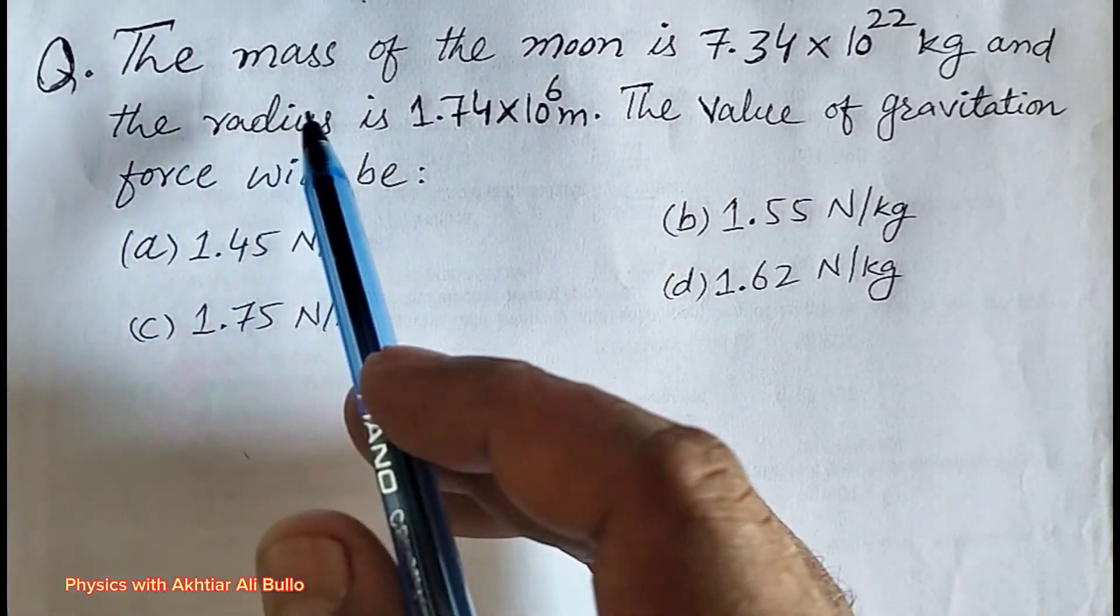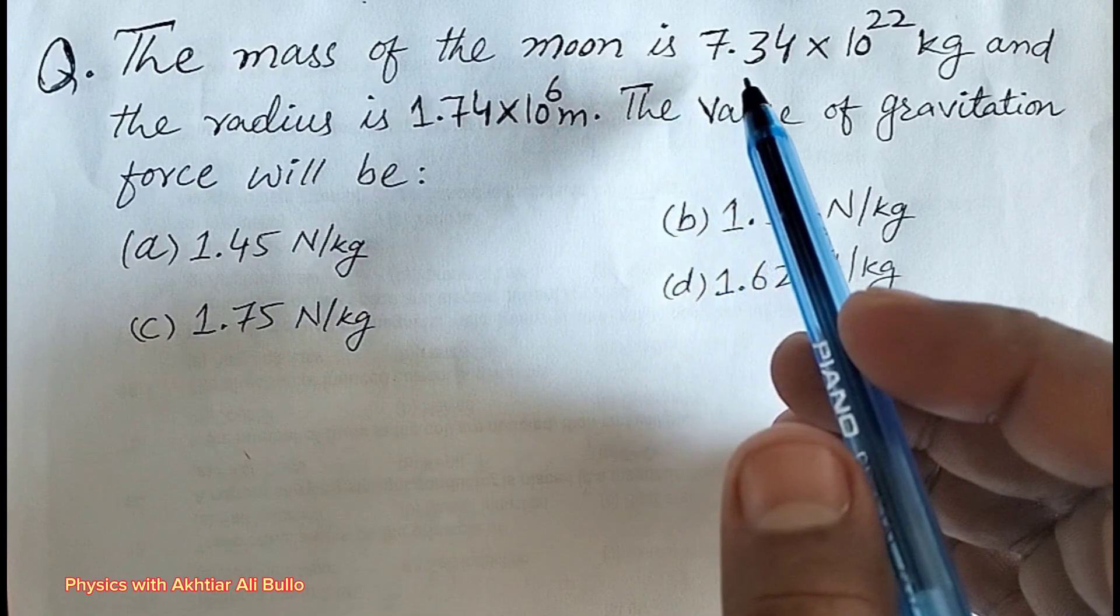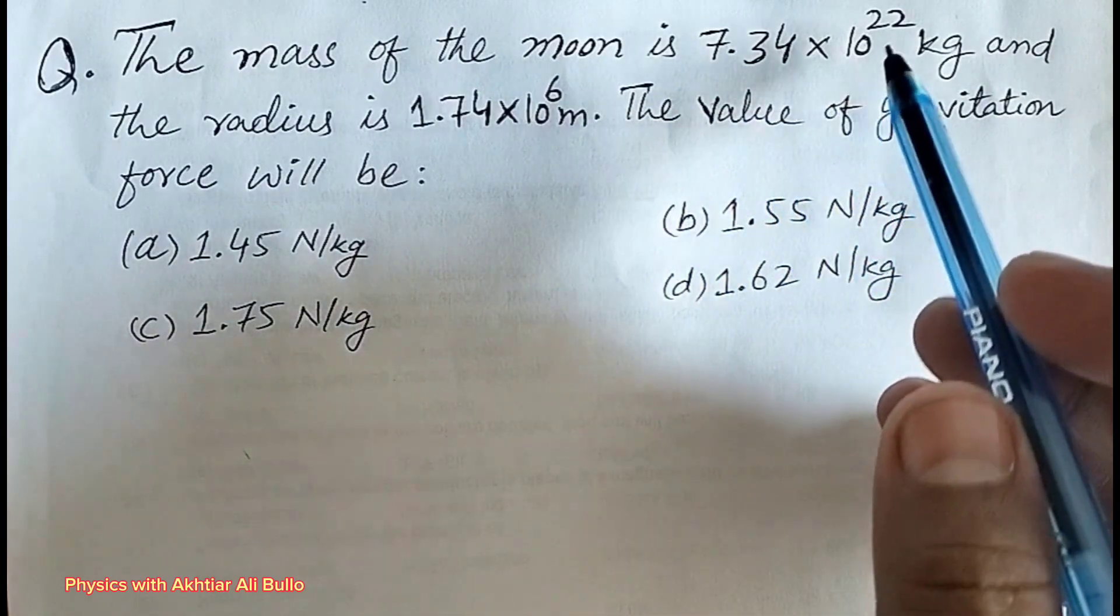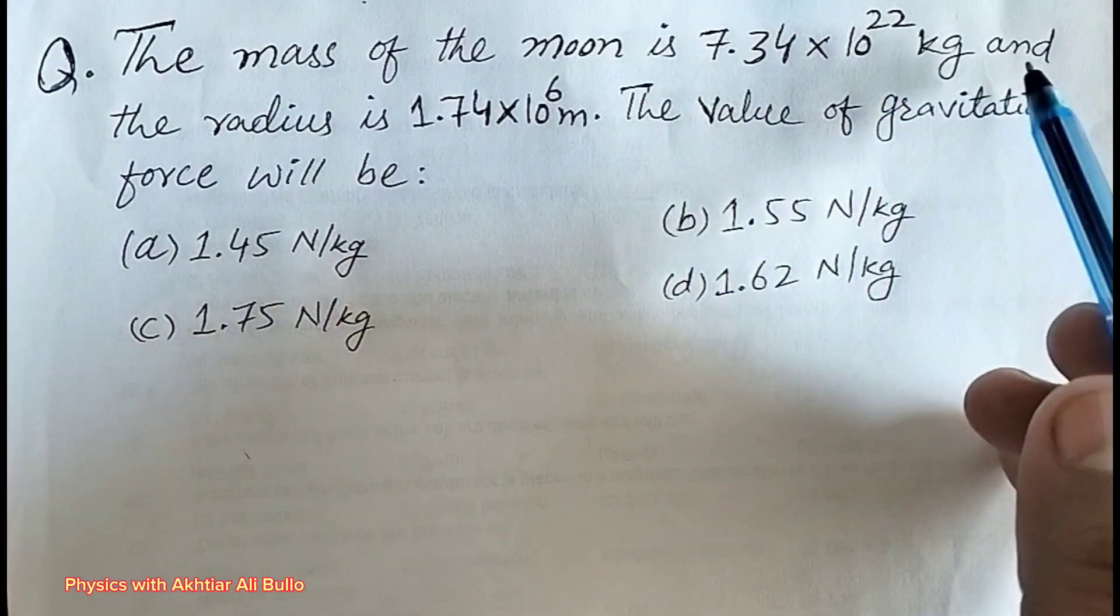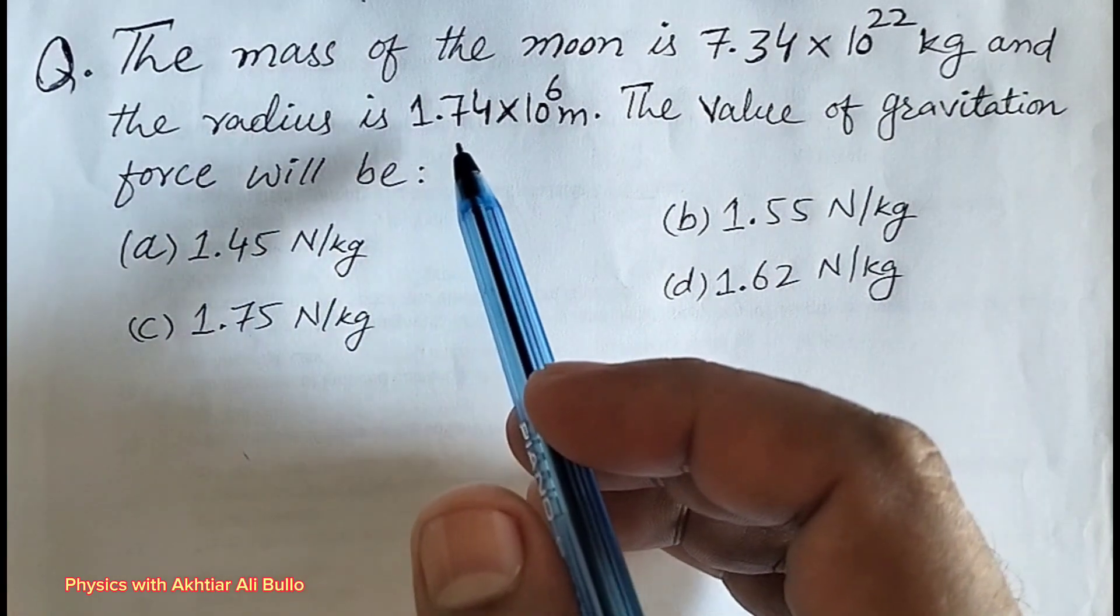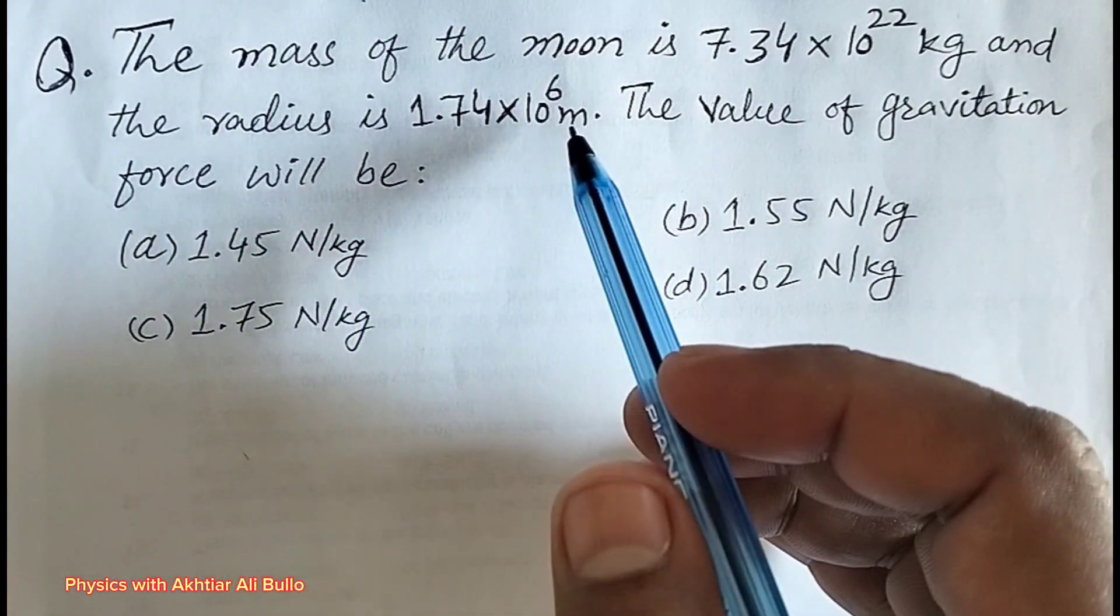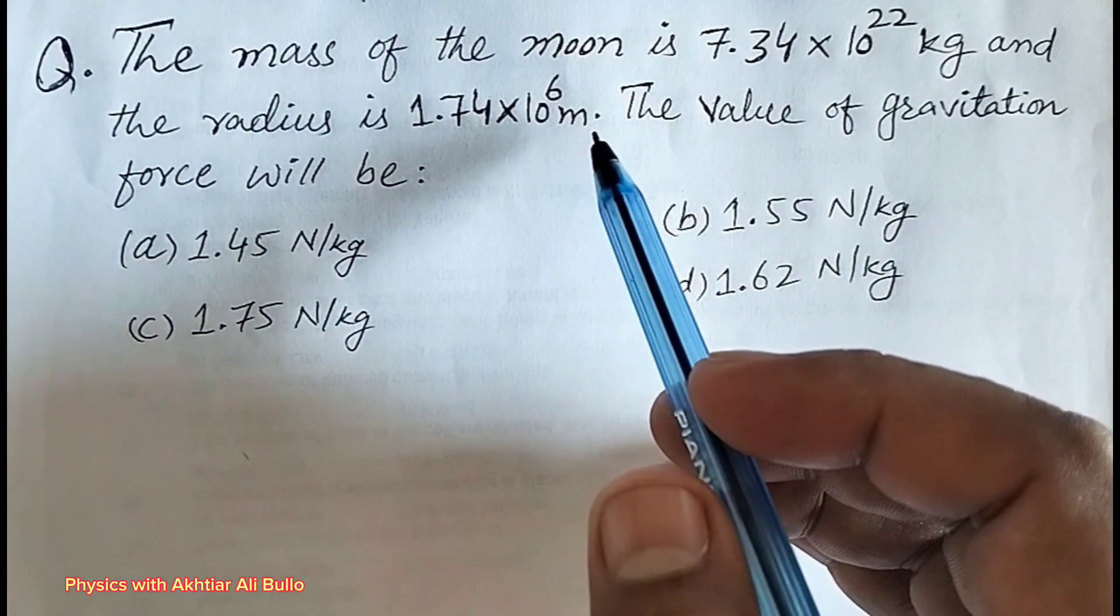The question is, the mass of the moon is 7.34 into 10 raised power 22 kg and the radius is 1.74 into 10 raised power 6 meter.